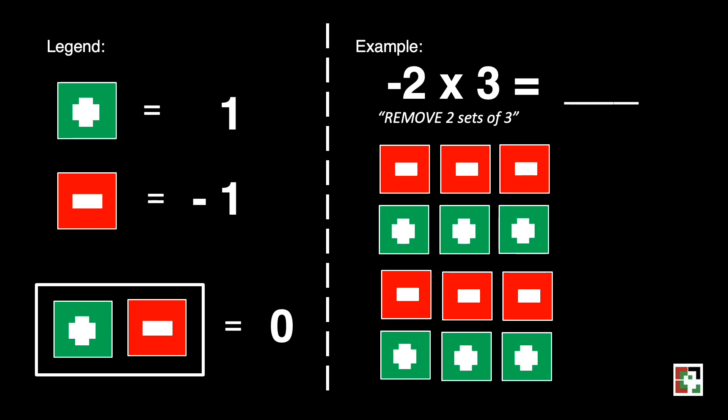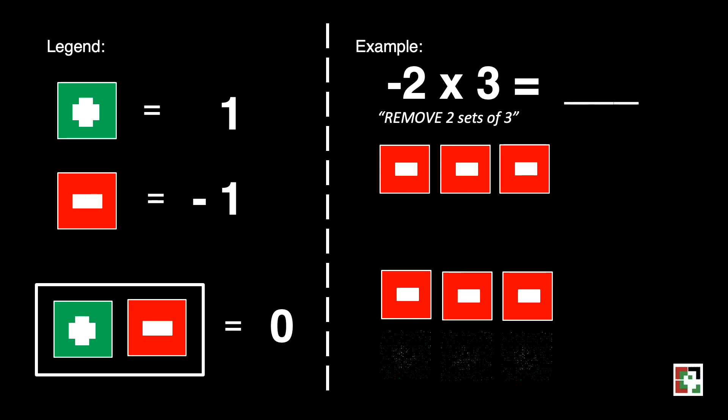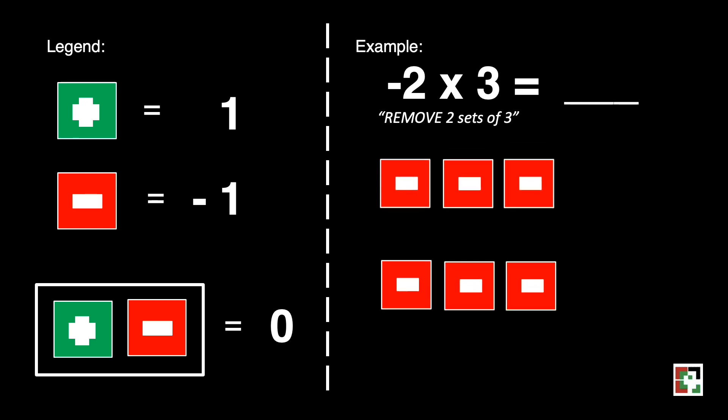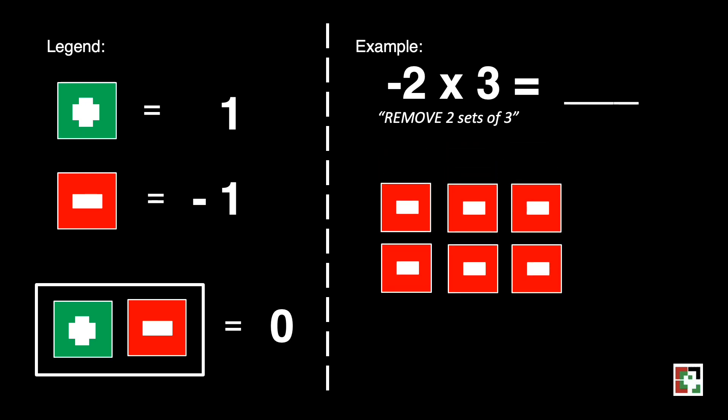One set of green at the top and one set of green at the bottom. And what was left were the six red squares. Telling us it is negative six. Our final answer is negative six.